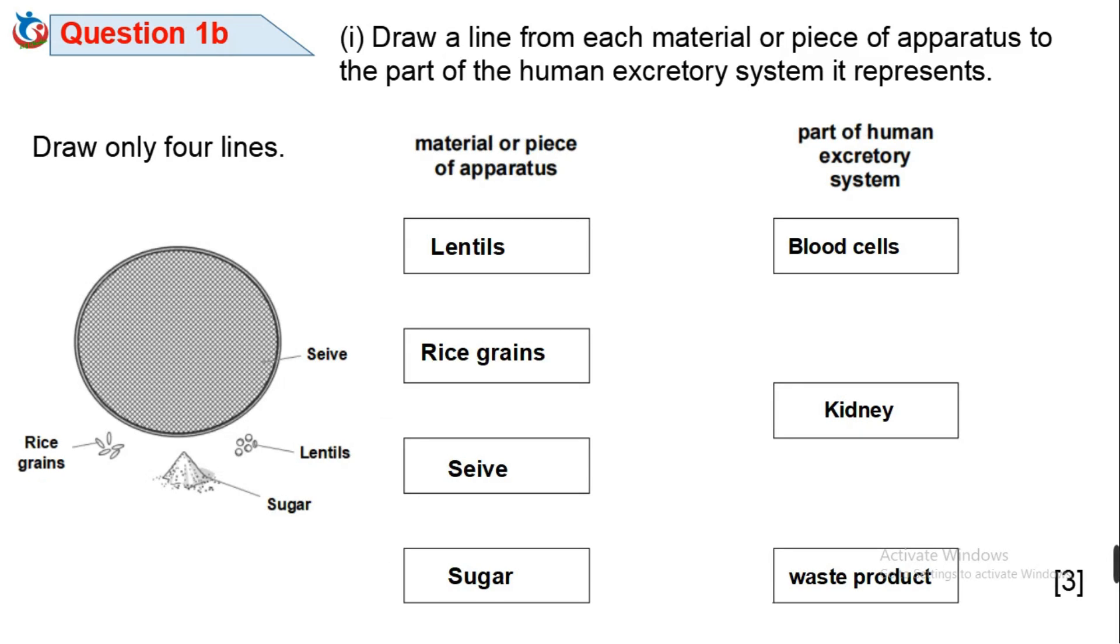The mixture is poured through the sieve. 1B1. Draw a line from each material or piece of apparatus to the part of the human excretory system it represents. Draw only four lines.